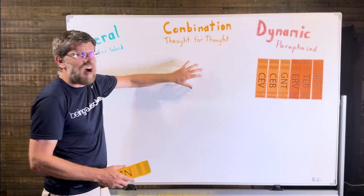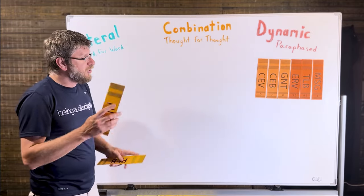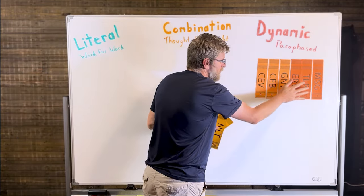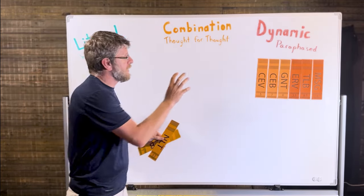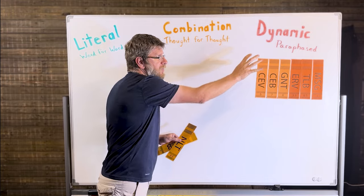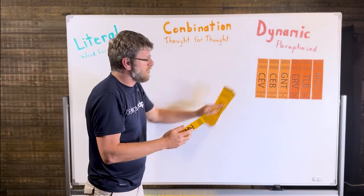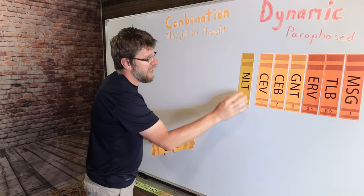We are now moving more into the thought-for-thought translation pattern, but the first one is the New Living Translation. The New Living Translation was looking back at the Living Bible and trying to incorporate some of the ancient manuscripts and make it a little bit more thought-for-thought. Still keep the dynamic equivalency, but make it more into the structure of the thought-for-thought pattern and include these original manuscripts.